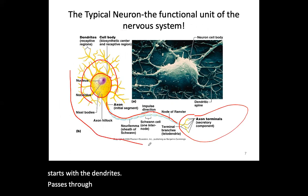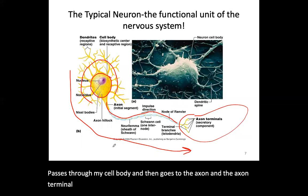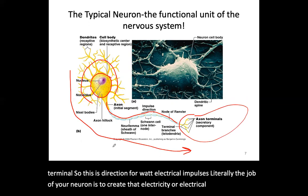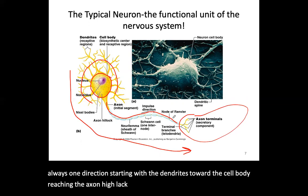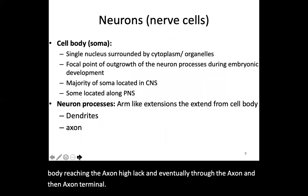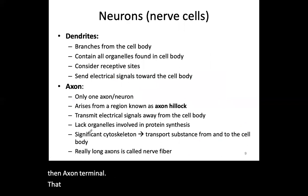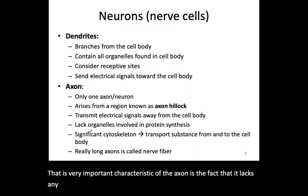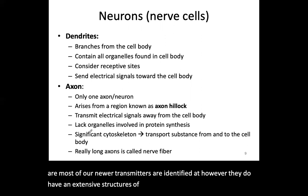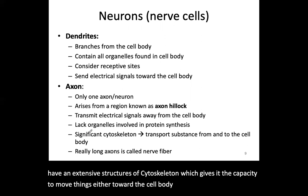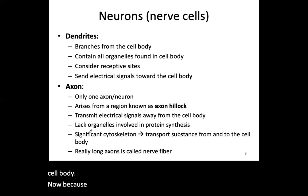Electrical impulses pass through the cell body and then go to the axon and axon terminal. The direction is always one way: starting with the dendrite, toward the cell body, reaching the axon hillock, through the axon, and then the axon terminal. An important characteristic of the axon is that it lacks organelles and cannot make proteins — most neurotransmitters are made elsewhere. However, axons do have extensive cytoskeleton structures that allow movement of materials toward or away from the cell body. Because it is a single long extension, a single axon is referred to as a nerve fiber.